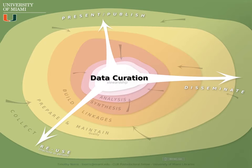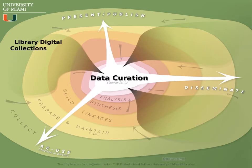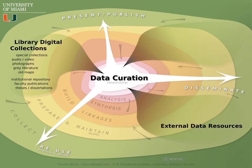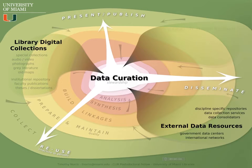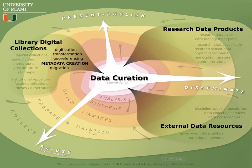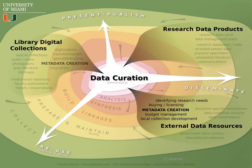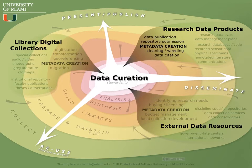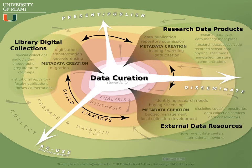Where the data comes from I've abstracted into three categories: the existing library digital collections, the existing external data resources, and the research data products produced by the research community on campus. To each of these we can attach verbs as the data moves into what I call the curation space. Each shares metadata creation — the description of the data — and with these descriptions we can build linkages, take advantage of new semantic technologies, and make the data interoperable, adding value and making it more reusable.